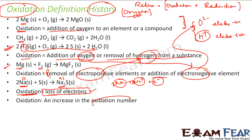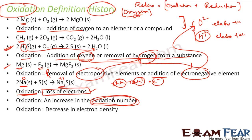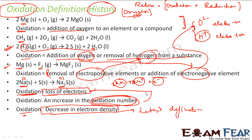The latest definition states that oxidation is the decrease in electron density. We will stick primarily to loss of electrons and increase of oxidation number. It is good to understand how the definition of oxidation evolved: from addition of oxygen, to addition of oxygen and removal of hydrogen, to addition of electronegative element and removal of electropositive element, to loss of electrons, to increase of oxidation number, and finally to decrease in electron density. The definition has evolved over time.